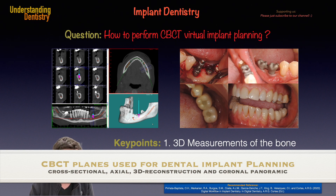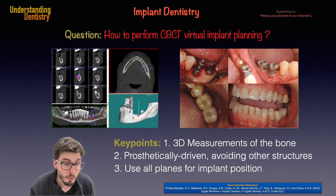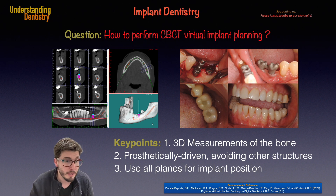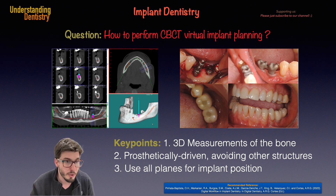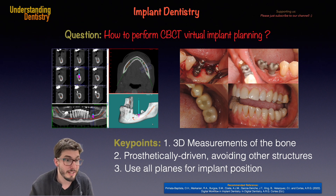On the top right, you have the axial plane. On the bottom right, you have the three-dimensional reconstruction, which is also useful — you can even see the conditions of the third molar distal to the implant with furcation exposure, which would be extracted. On the bottom left, there is an image similar to an OPG called the coronal panoramic view, which is useful to plan implants and assess the mesial-distal distances between adjacent implants or between implants and adjacent teeth.